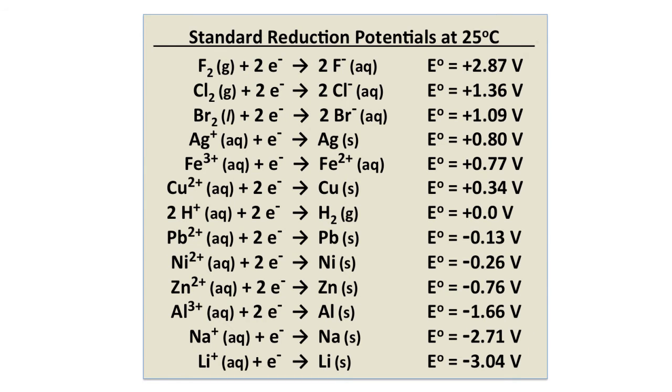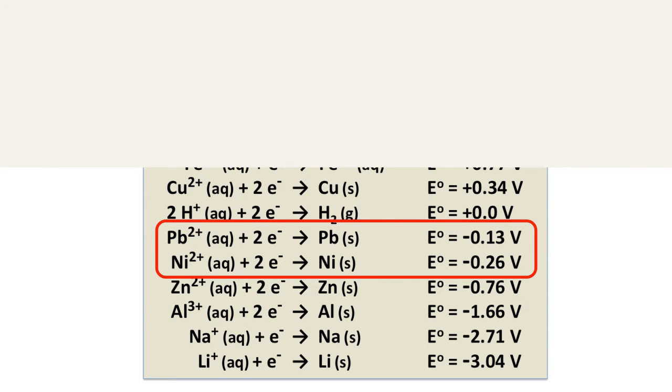First thing we need to do is we need to figure out what's going on under standard conditions. There are the lead and the nickel half reactions for reduction. We look at the two half reactions for reduction. The one that is higher in reduction potential is the one that's more easily reduced. So lead two plus plus two electrons makes lead solid, and that half reaction has a standard potential of -0.13 volts.